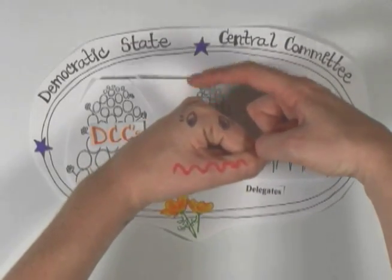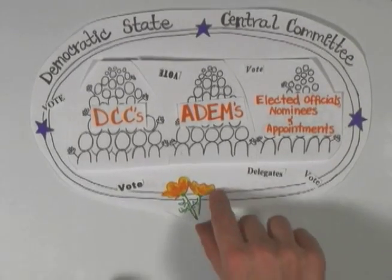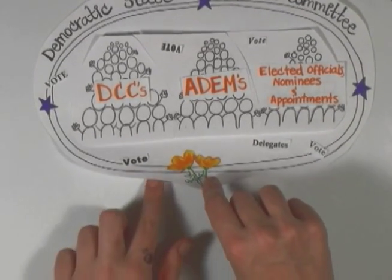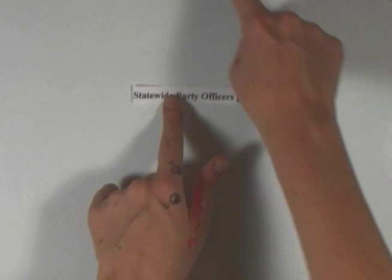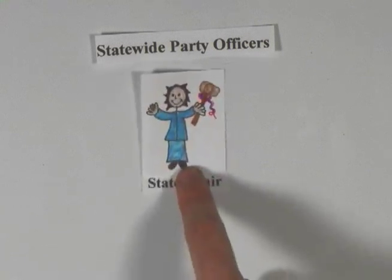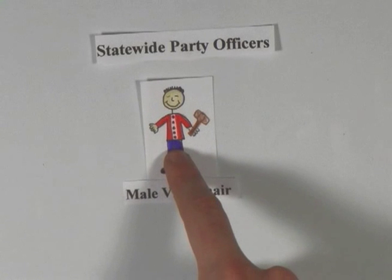The state central committee is big, so how does it make decisions? It's divided in a couple of other ways to help out with this. First, there are the officers. The statewide party officers are elected for four-year terms by the delegates at the state party convention held after a presidential election. The statewide officers include the state chair, who is the CEO and official voice of the state party and directs a lot of the party operations.